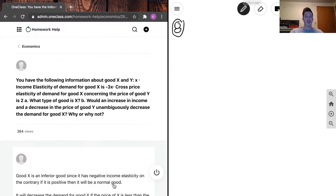You have the following information about good X and Y. Income elasticity of demand for good X is negative three, and the cross price elasticity of demand for good X between the price of good Y is two.